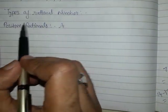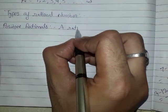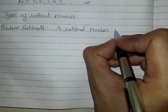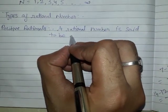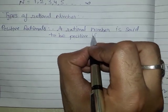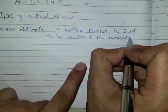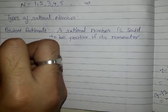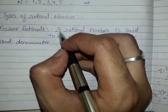There are two types of rational numbers: one is positive rational number and second one is negative rational number. First we will study positive rational numbers. A rational number is said to be positive if its numerator and denominator are of the same sign.